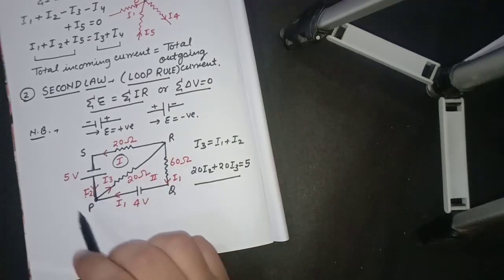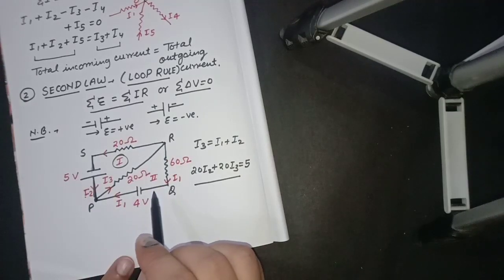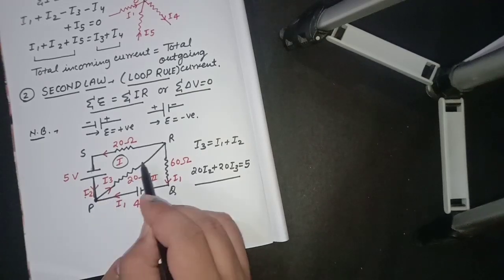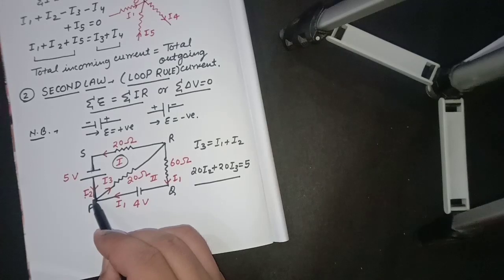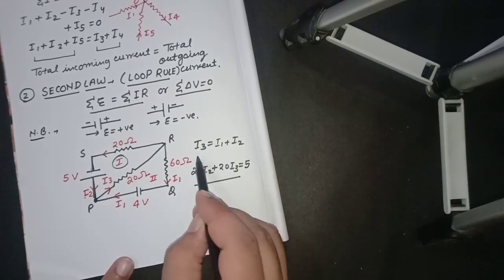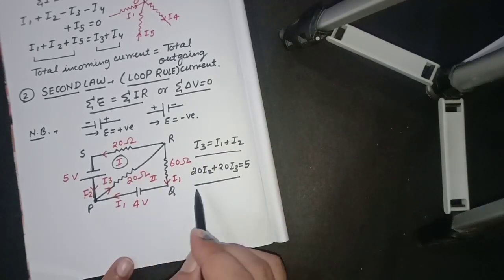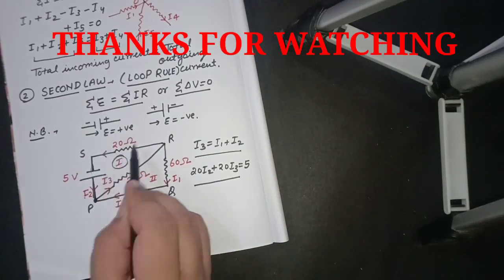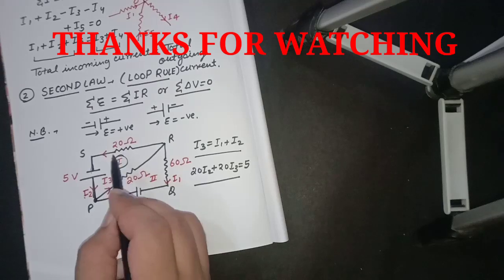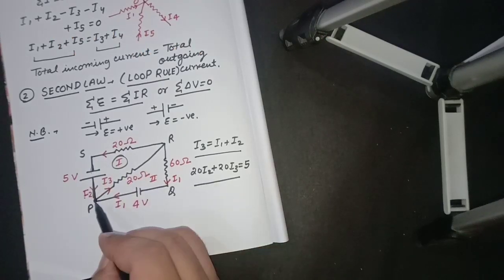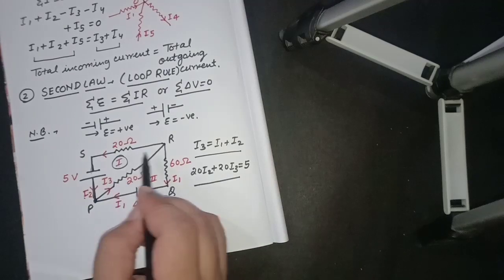We can see the above two laws with the help of an example circuit diagram, and here we can write the equations using these two laws. Applying the junction rule at point P: I3 is going outwards and I1 and I2 towards it, so I3 equals I2 plus I1. For the loop rule, sigma EMF equals sigma IR: the resistance is 20 ohms and the current is I2, so 20·I2 plus 20·I3, and we are going from negative to positive so that will be plus 5.